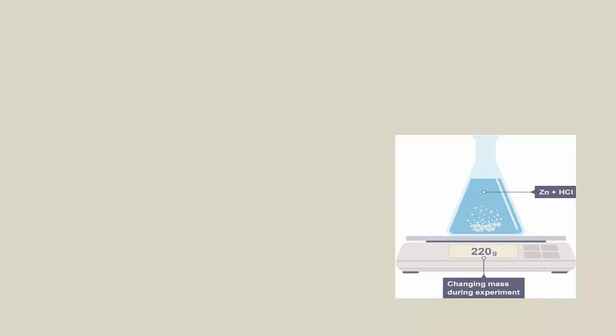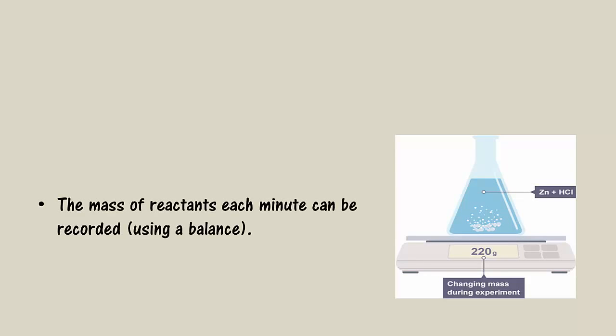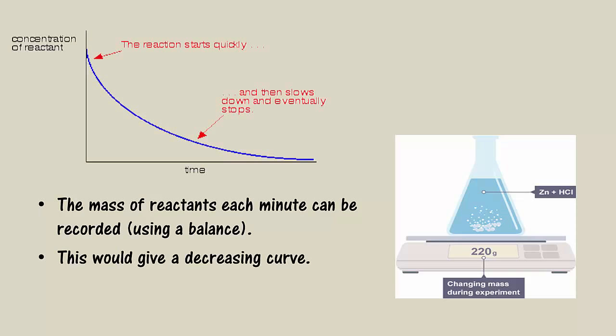Another way to record the reaction rate is to record the decreasing mass of reactants by placing your reaction on a balance. As the gas bubbles away, the mass of the flask will drop. This will give a decreasing reaction rate curve until the change in mass each second becomes zero, and the reaction rate has stopped.